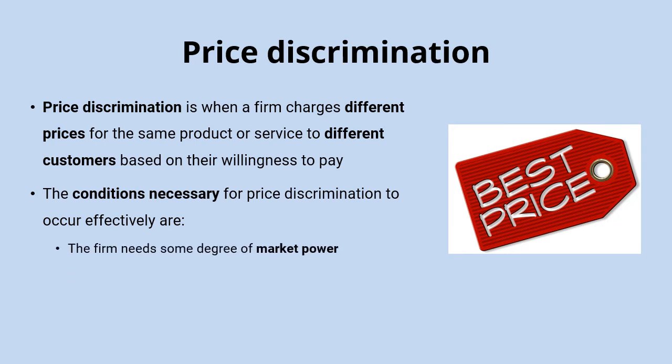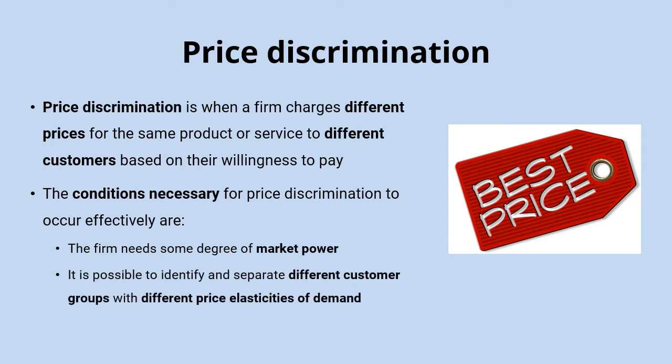The first condition is that the firm needs some degree of market power — not necessarily a pure monopoly, but enough market power to set its own prices and face a downward-sloping demand curve. Second, it needs to be possible to identify and separate different customer groups with different price elasticities of demand, because you need customers with different willingness to pay in order to charge different prices.